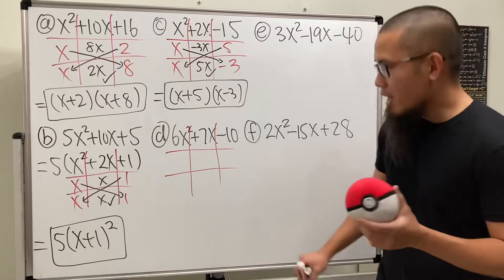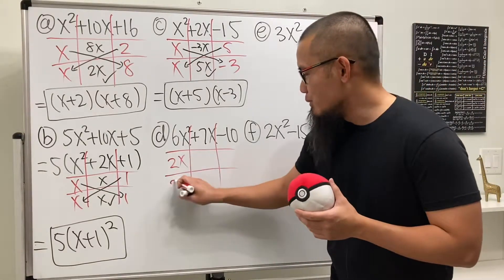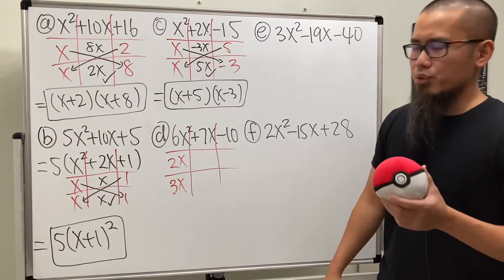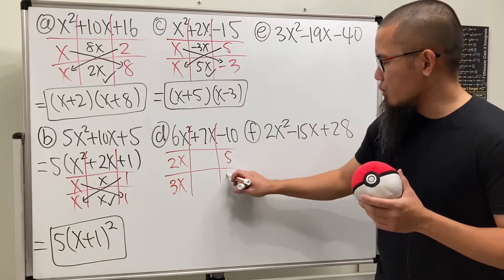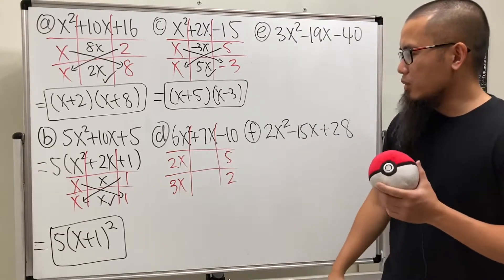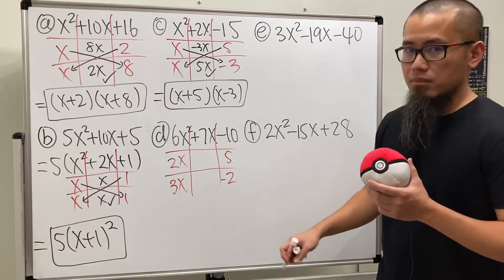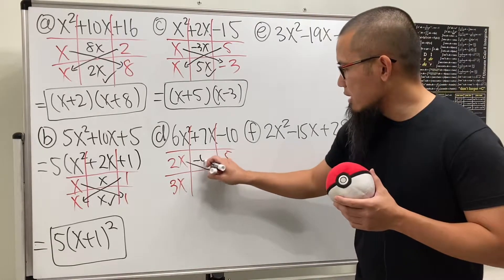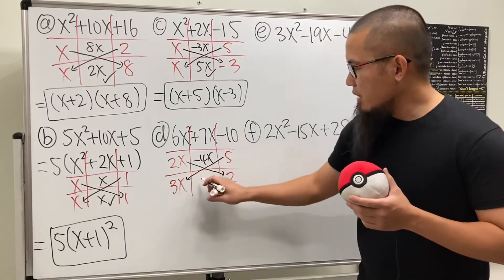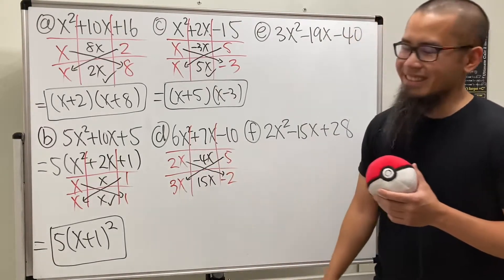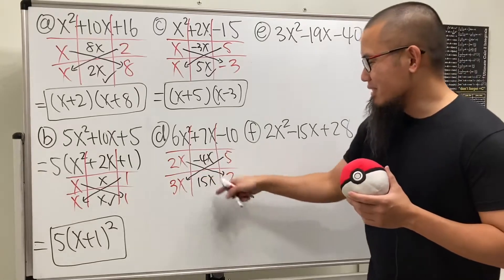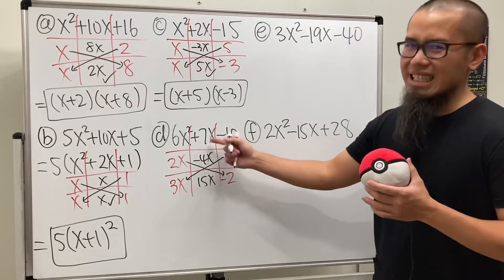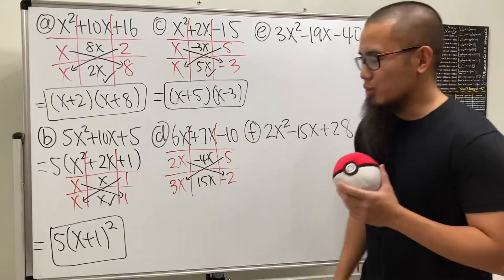I'm going to do it with a wrong combination first, on purpose. Let's try if we have 2x times 3x. To get negative 10, maybe we use 5 and 2. Maybe I just do 5 and 2. And we have to make one of them negative, right? So maybe let's make this negative. And let's see what happens. 2x times negative 2 gives us negative 4x. 5 times, sorry, 5 times 3x is 15x. But together, 15x minus 4x is not 7x. This is the wrong combination.